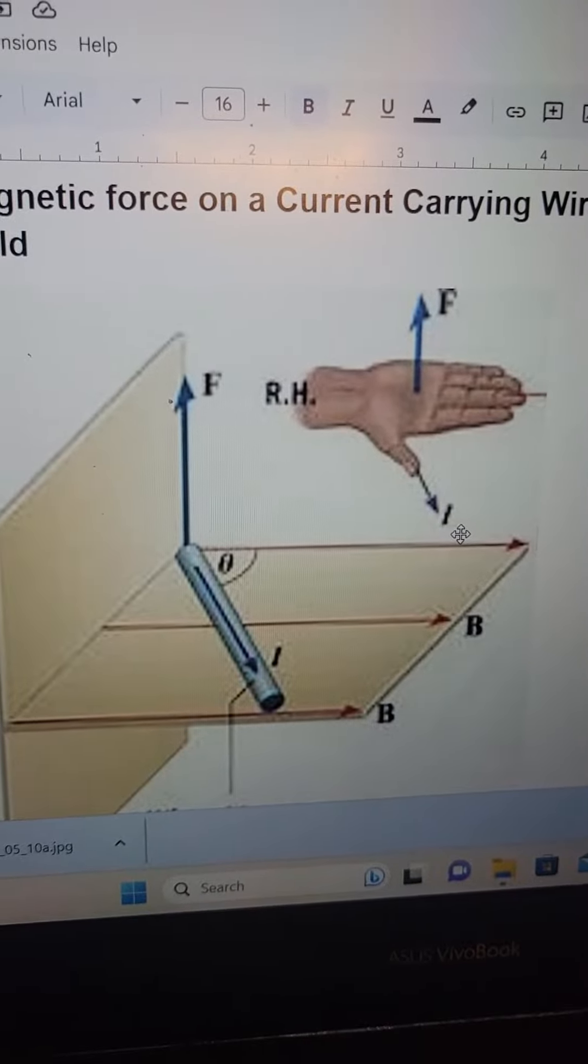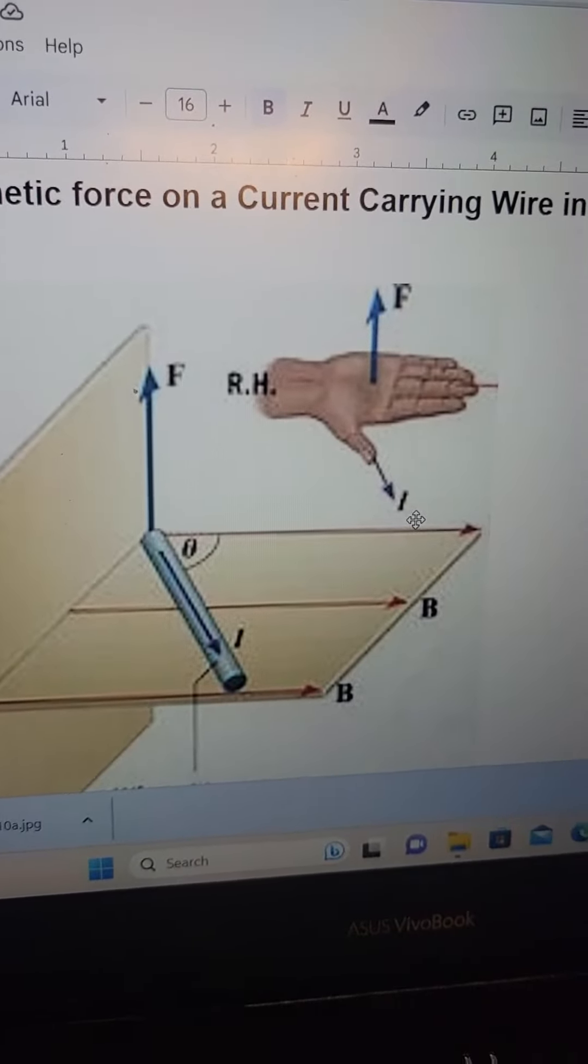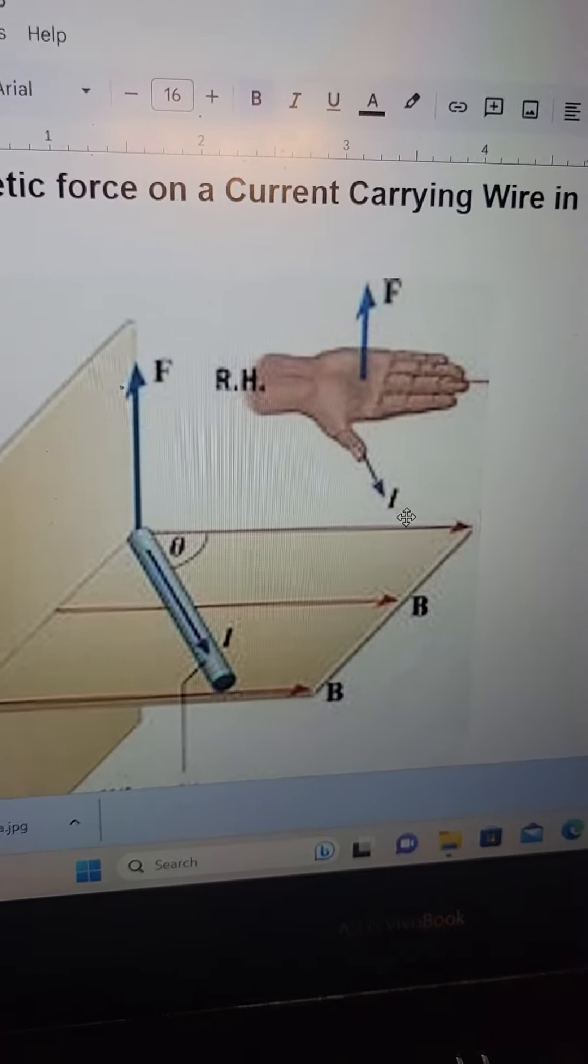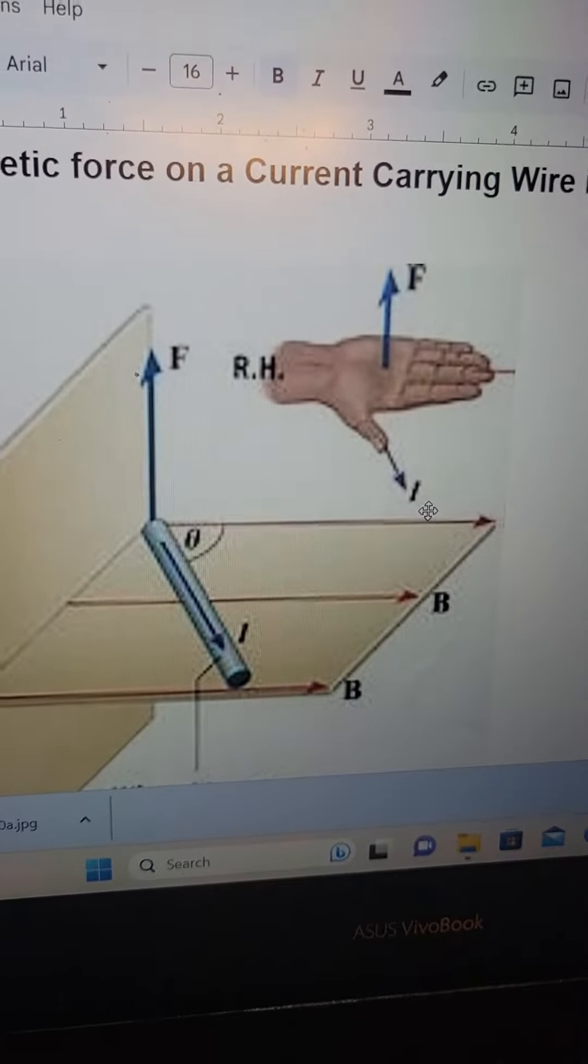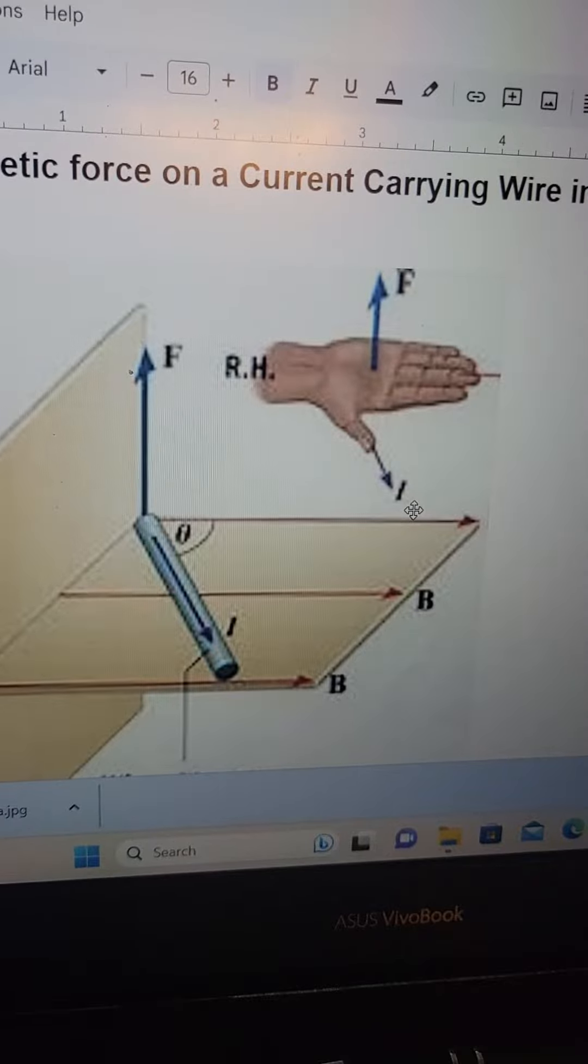And you can use the right-hand rule to decide which way that force will be on the wire. So for example, what you want to do is you want to use your thumb for the current, you want to use your fingers for the direction of the field B, and you want to use your palm to tell you the direction of the force.